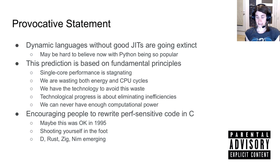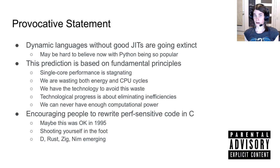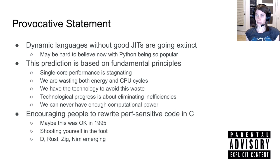Regarding Python: they consistently encourage people to write performance-sensitive code in C and call it from Python. Maybe that was okay back in 1995, but it's going to be less and less acceptable. Python is shooting itself in the foot by encouraging people to rewrite code in C, because languages like D, Rust, Zig, and Nim are emerging — statically typed, very comfortable to write, and delivering very good performance. If you're asking people to step away from Python to write performance-sensitive code, people will ask why they shouldn't just write all their code in a better-optimized language.